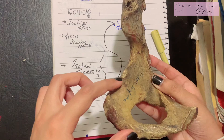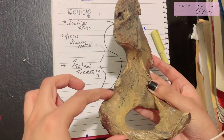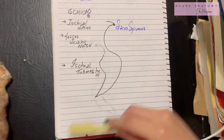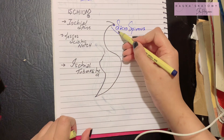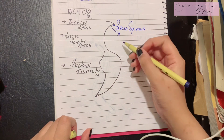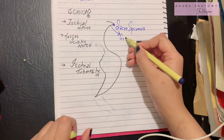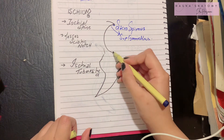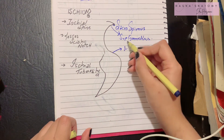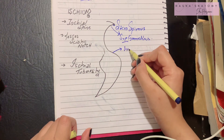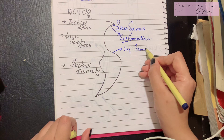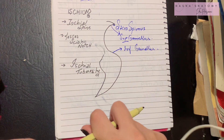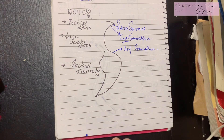The lesser sciatic notch has an upper part and a lower part. In the upper part of the lesser sciatic notch arises the superior gemellus muscle, and at the inferior part arises the inferior gemellus muscle.